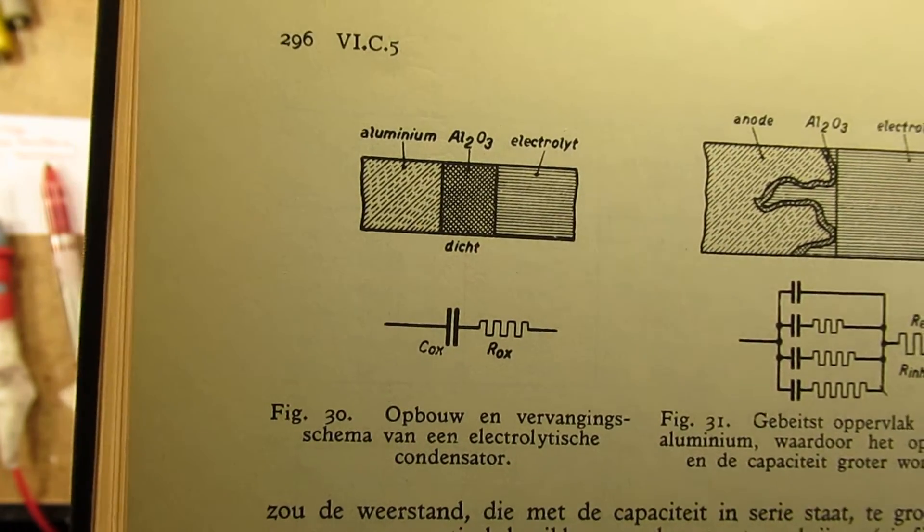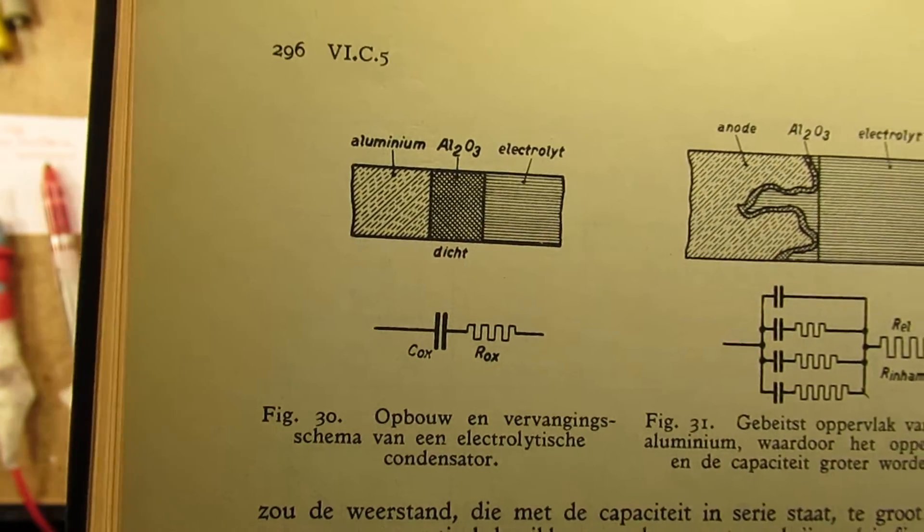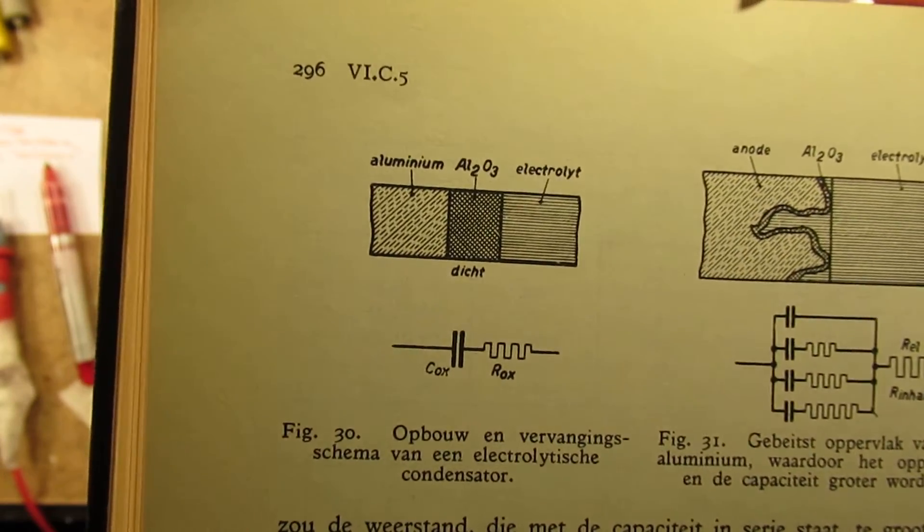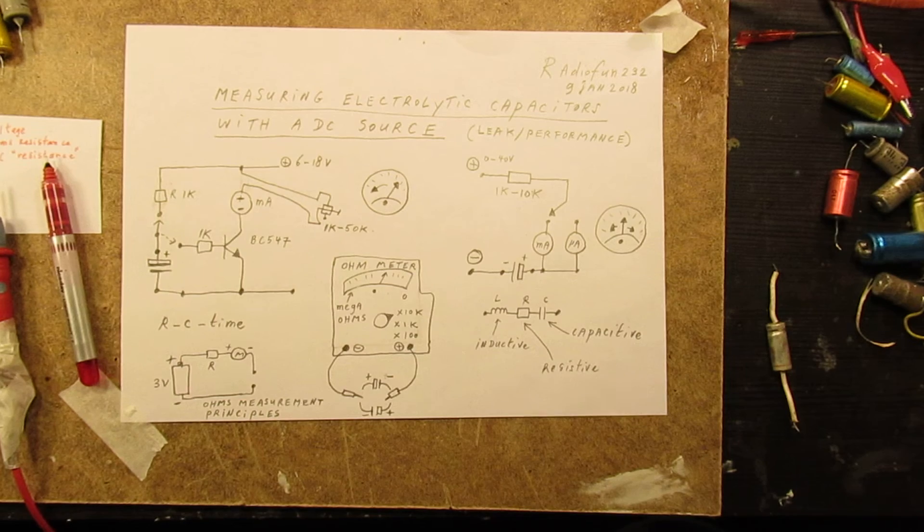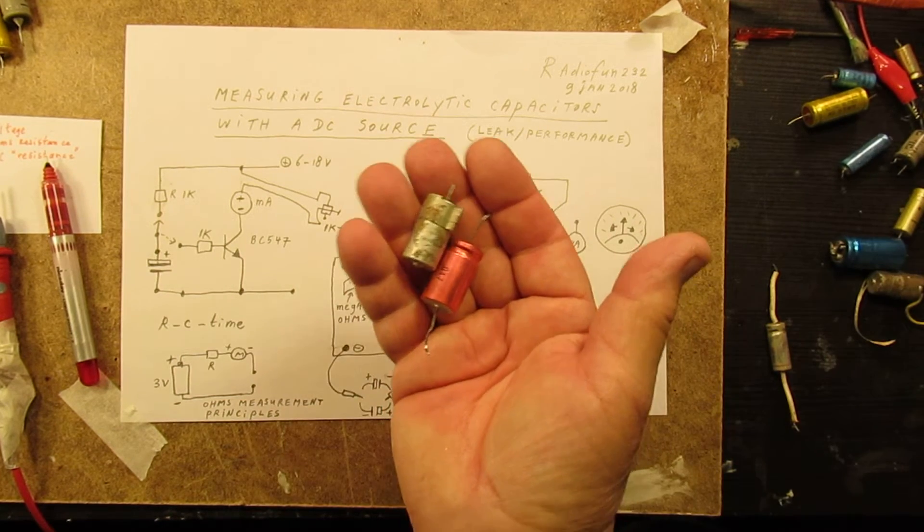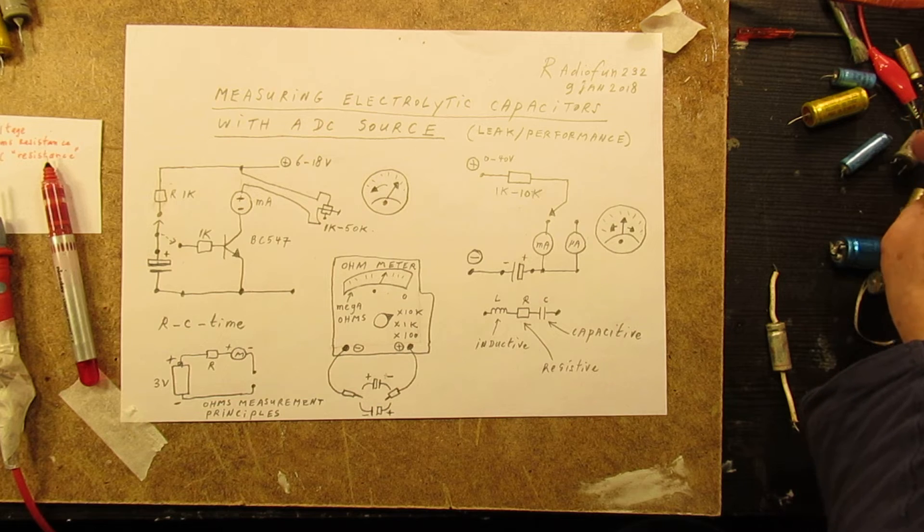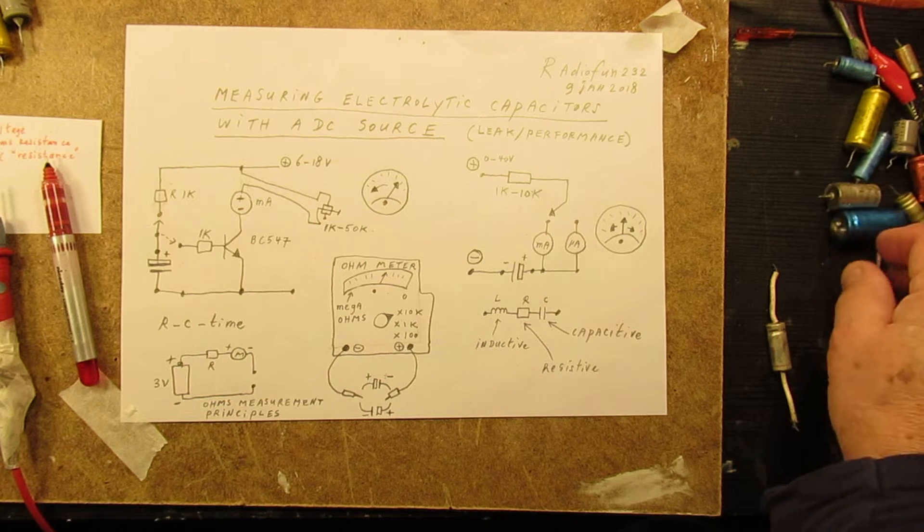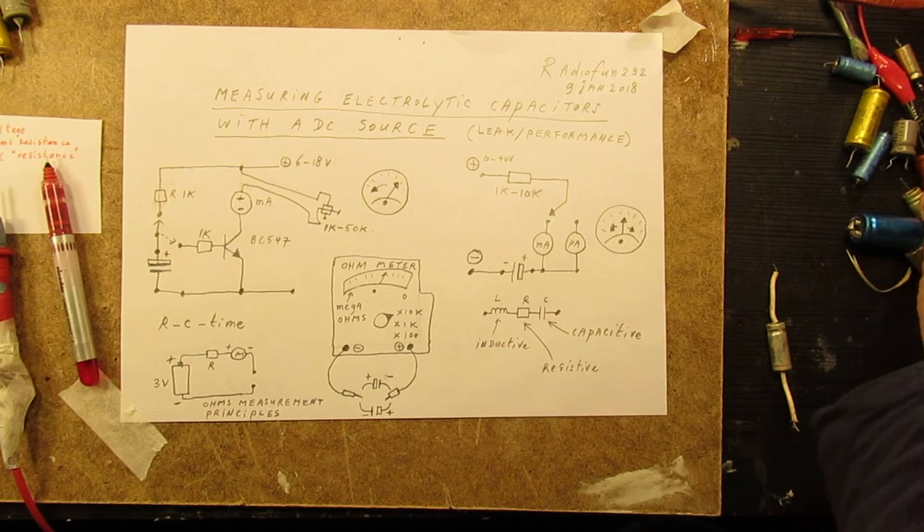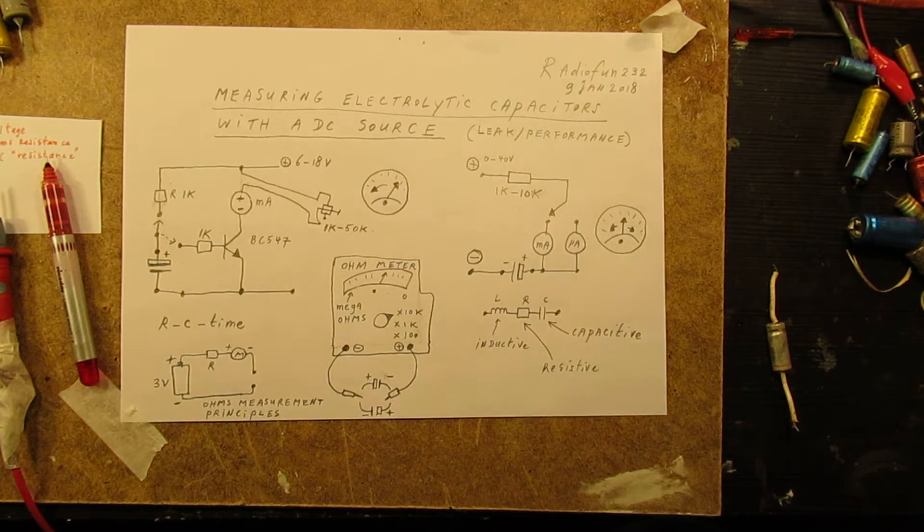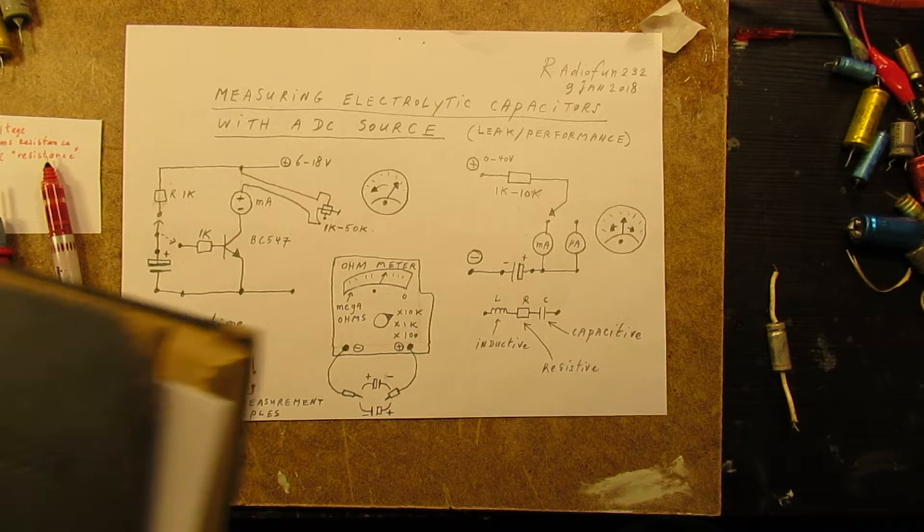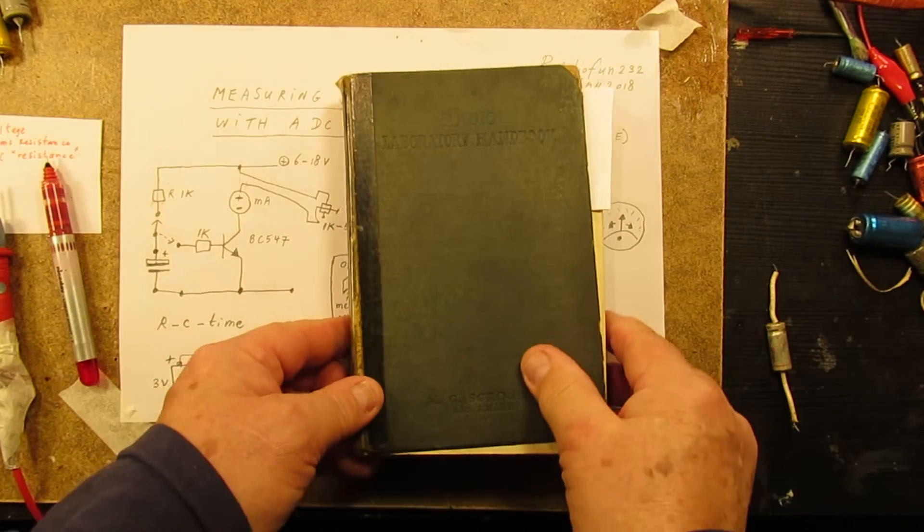You see here also the replacement schematic for an electrolytic: a resistor and a capacitor. So inside all these capacitors is, in many cases, a very thin foil of aluminum, and it could be that there is moisture inside. A good way to test an electrolytic: